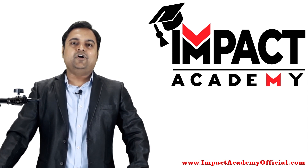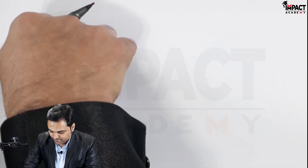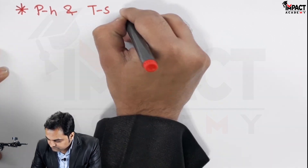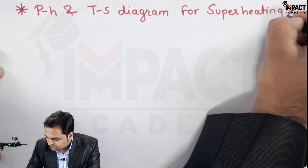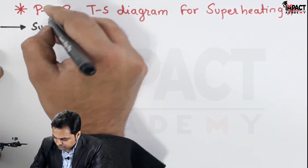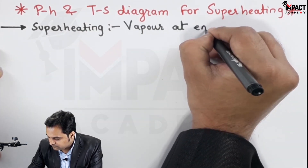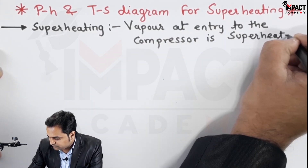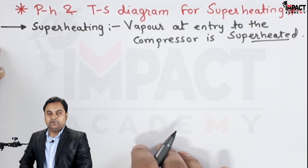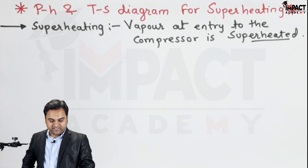In this video we are going to see the P-H and T-S diagram for the condition of superheating. Superheating means that the vapor at the entry to the compressor is superheated. Let's get started with the diagram.